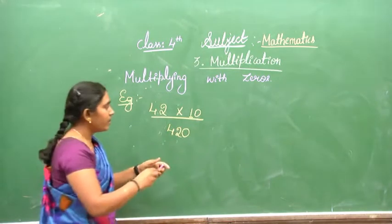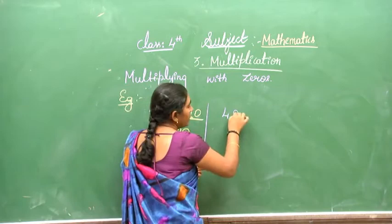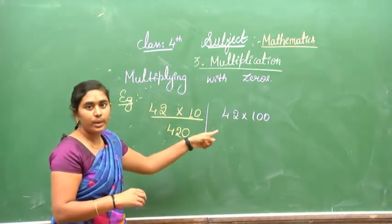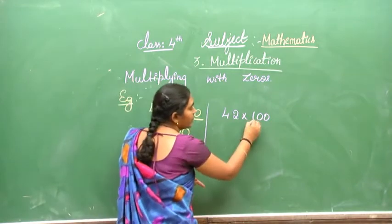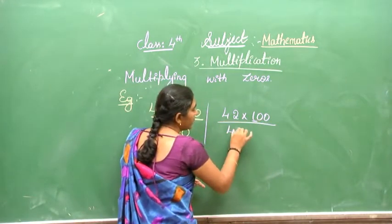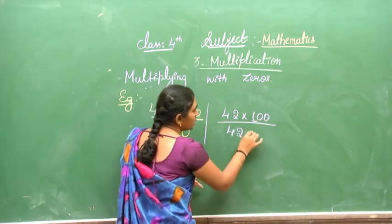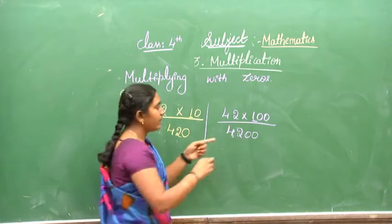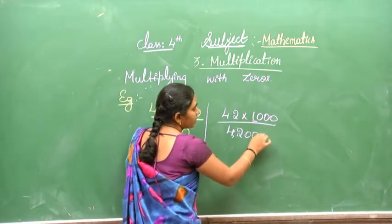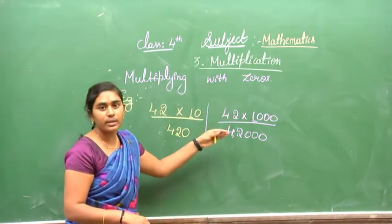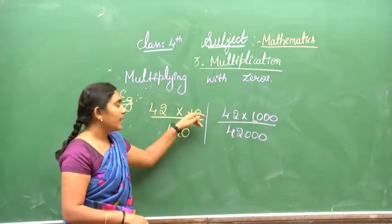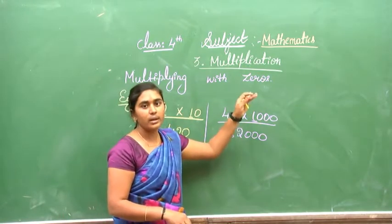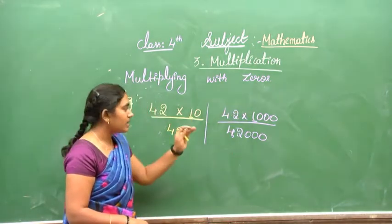If the number is 42 multiplied by 100, there are at least two zeros, so the answer will be 4,200. If it is multiplied by 1,000, you write three zeros, giving 42,000. For 10 lakhs, it would be 10 lakhs, like that.